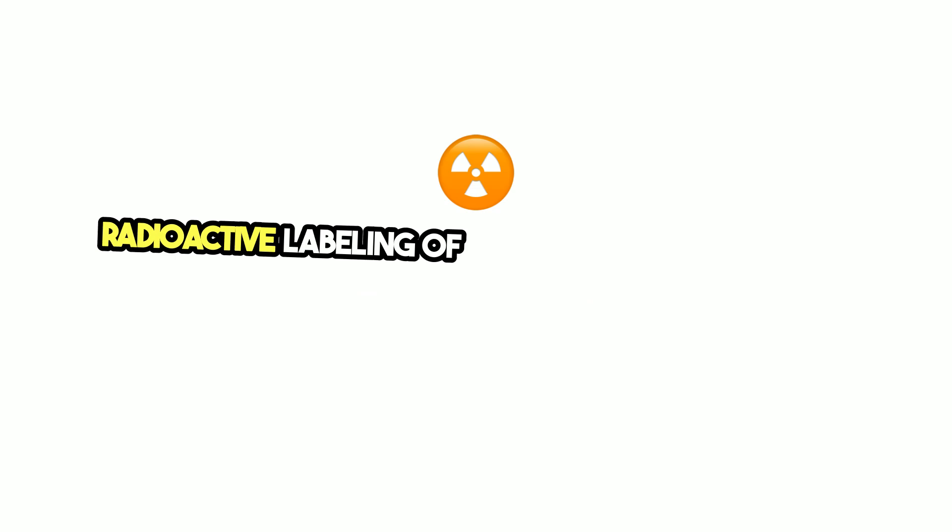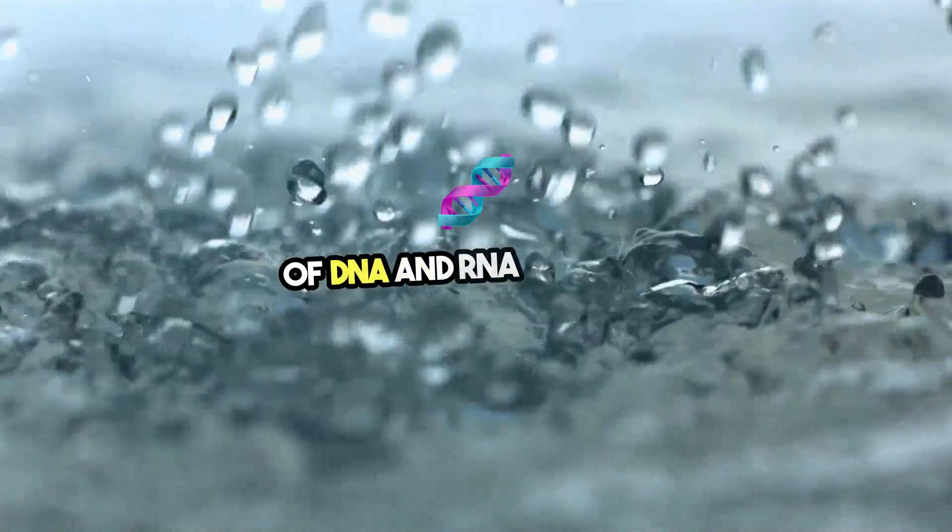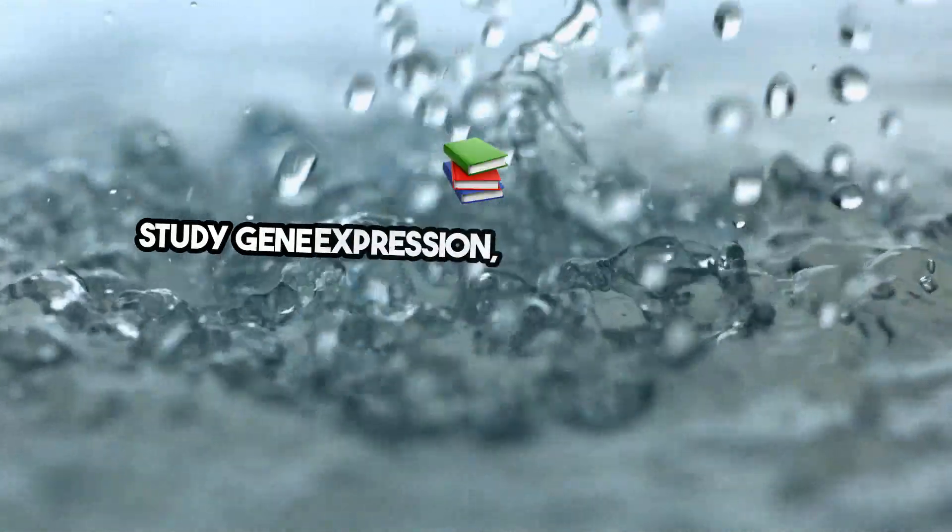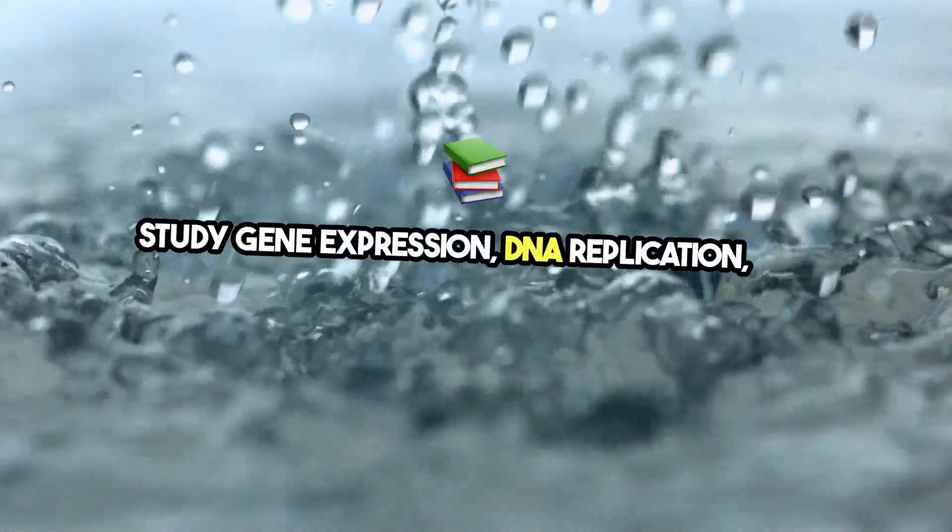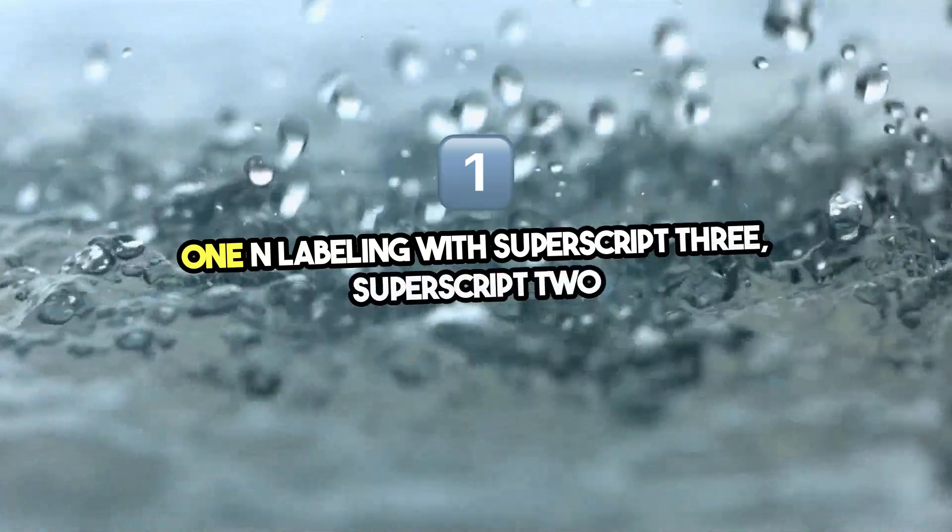Radioactive labeling of nucleic acids. Radioactive labeling of DNA and RNA is used to study gene expression, DNA replication, and more. 1. End-labeling with ³²P.